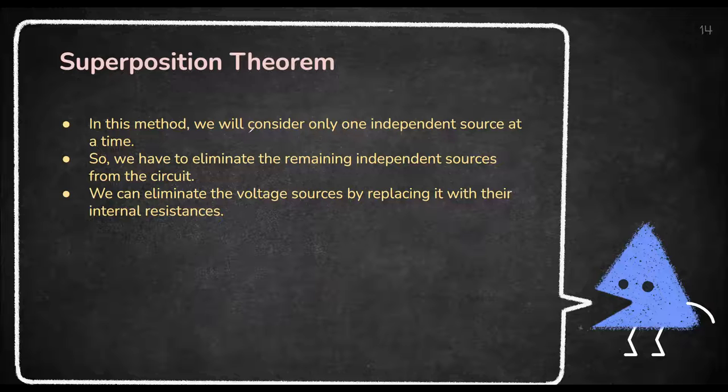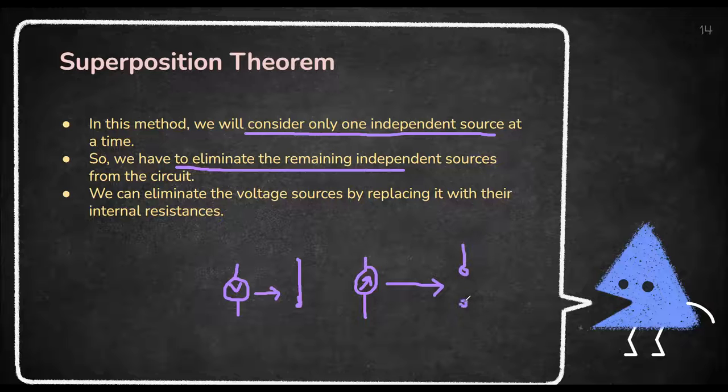Before going to superposition theorem, let's see what types of theorems are in this chapter on sources of electrical power and network theorems. You have to know three different types: first is superposition theorem, second is Thevenin's theorem, and third is Norton's theorem. We are going with the first theorem, superposition theorem. In this method, we will consider only one independent source at a time.